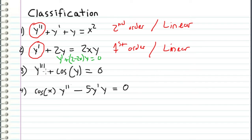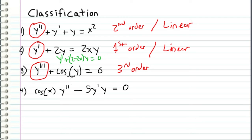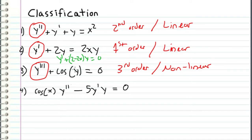In the third example, the highest derivative is y triple prime, so this is a third order differential equation. We see right here that we have cosine of y. This is not y or its derivative to the first power, and there's no way to turn cosine of y into a function of x times y. Therefore, this is a third order nonlinear differential equation.